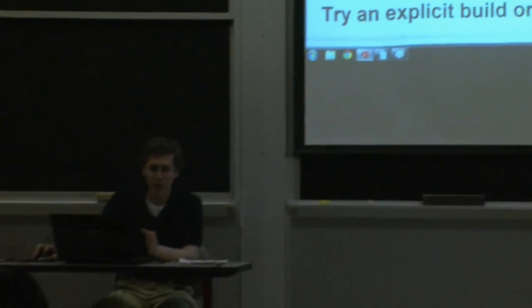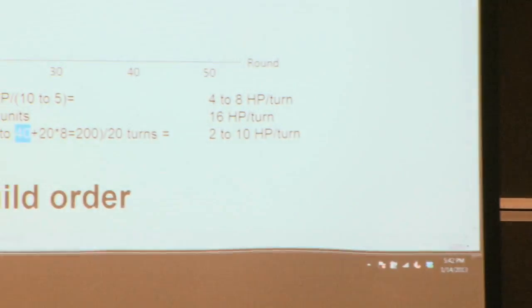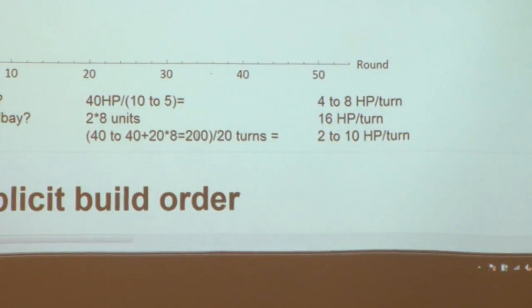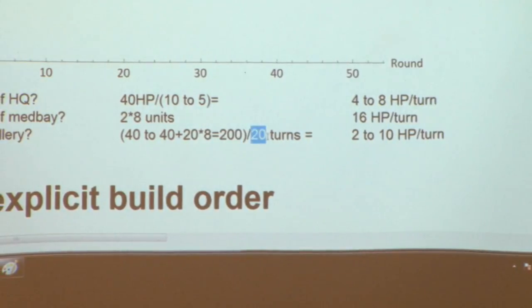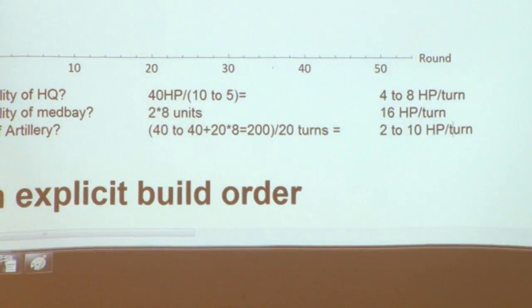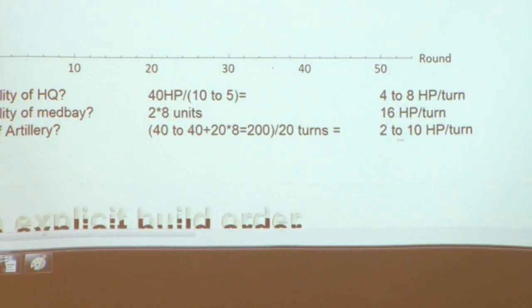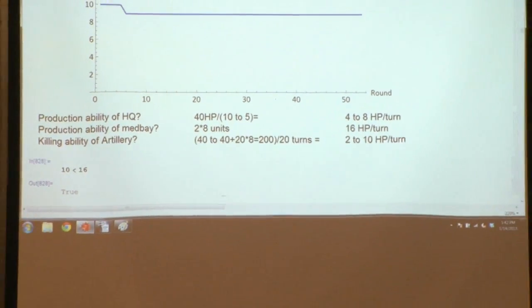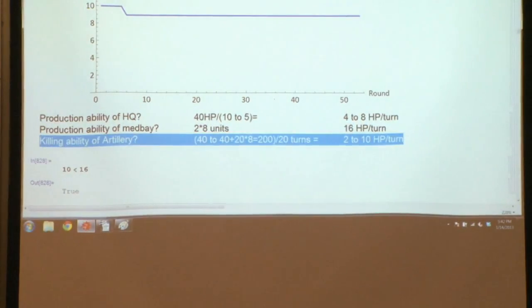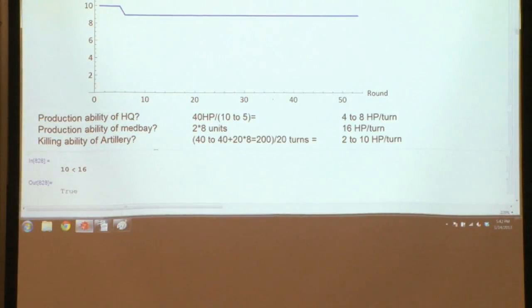Even if you're using med bays incorrectly in various ways, you'll still do much better than a headquarters alone — ignoring the fact that you need injured units in order to produce hit points at a med bay. What's the killing ability of artillery? The best artillery can do is deal 40 damage to its target and 20 damage to each of 8 adjacent targets, for a total of 200 damage every 20 turns — its attack delay. That gives us 10 hit points per turn. And 10 is less than 16. So numerically the med bay beats the artillery in raw throughput.